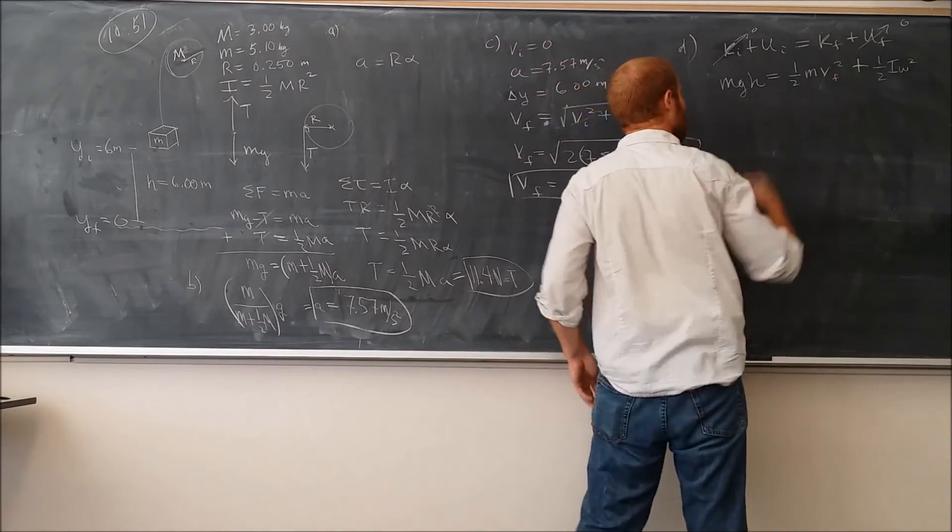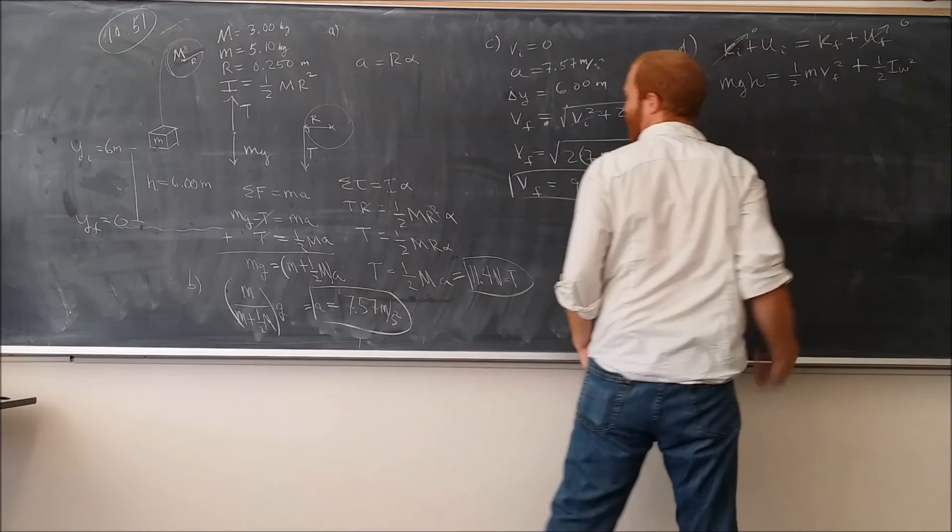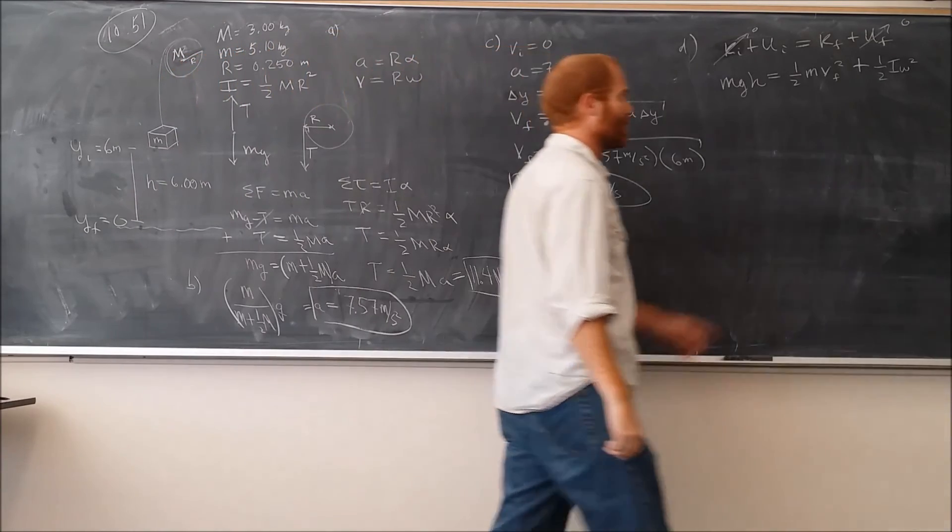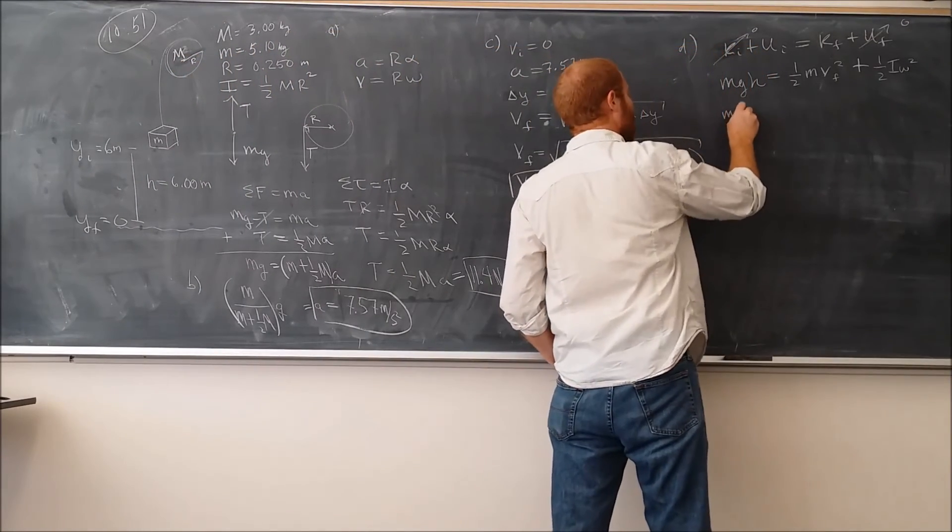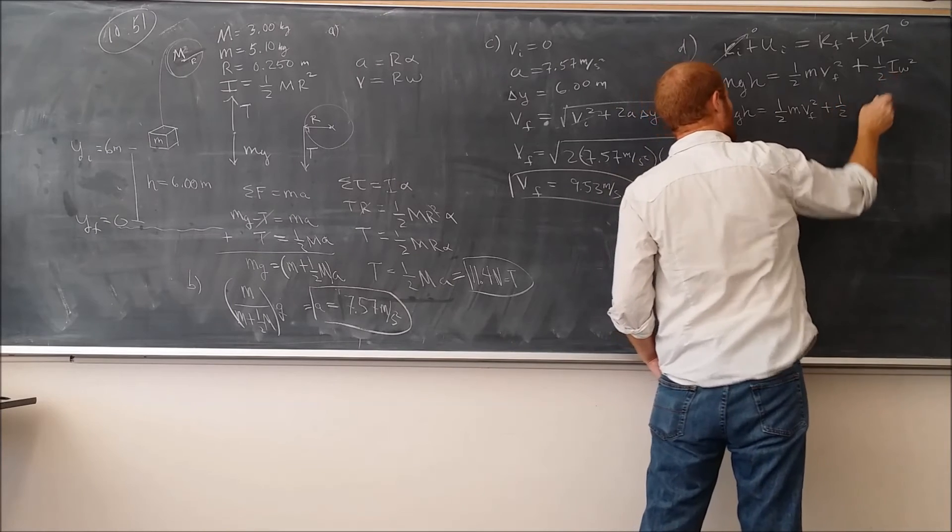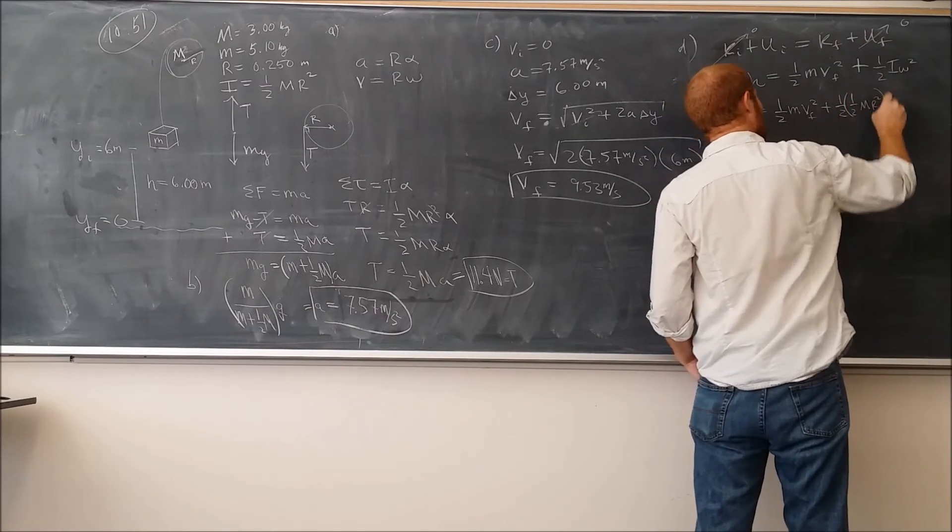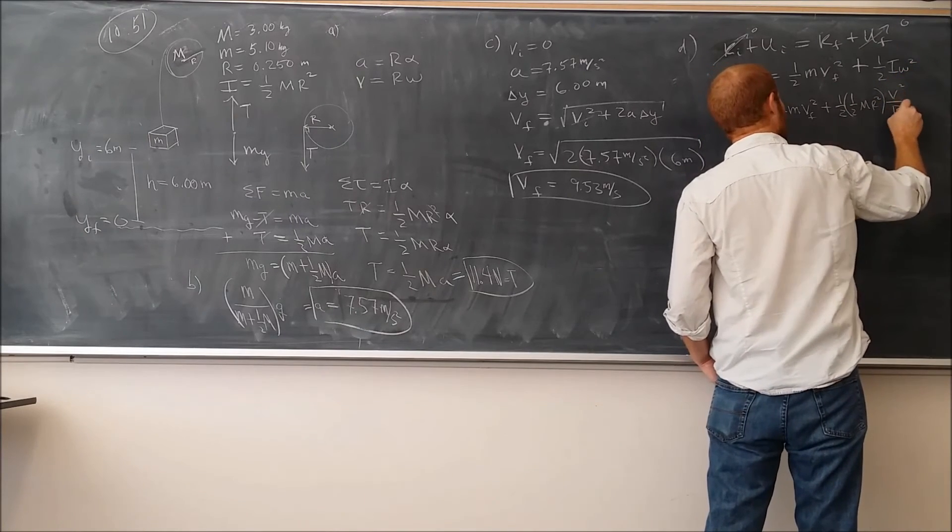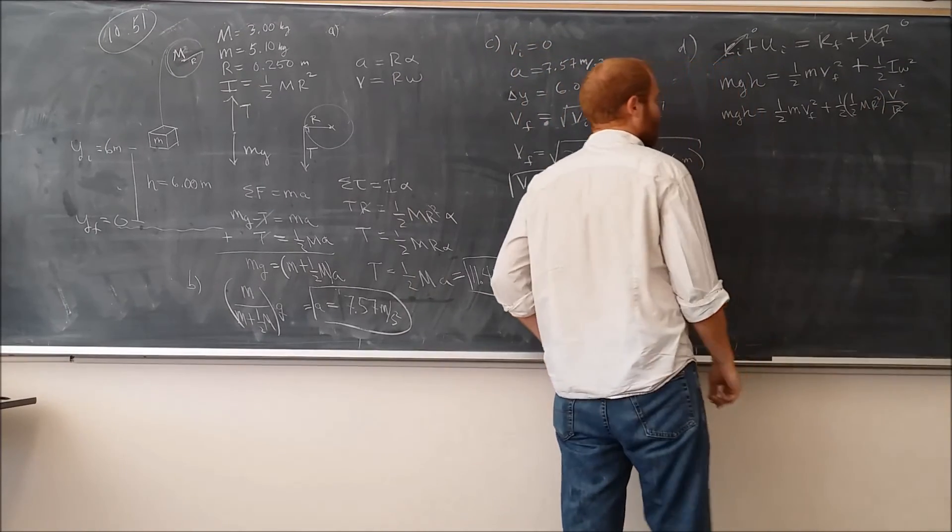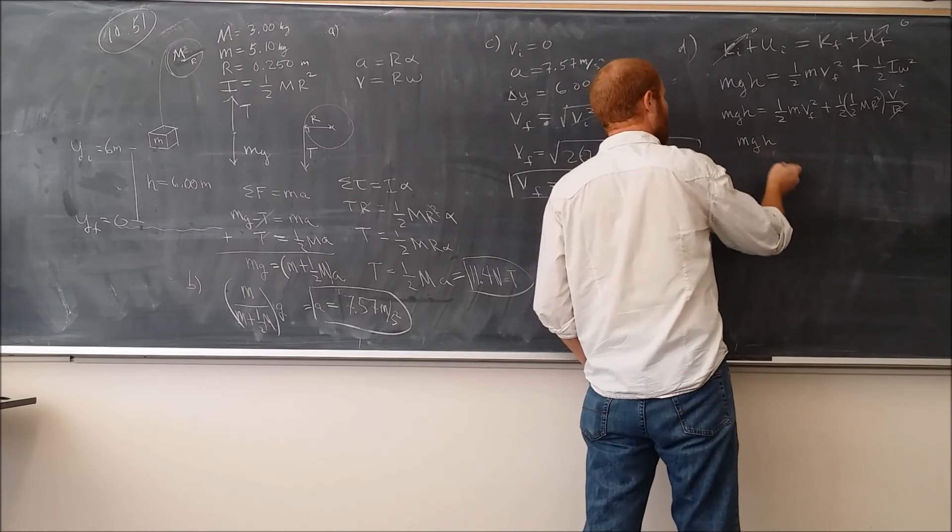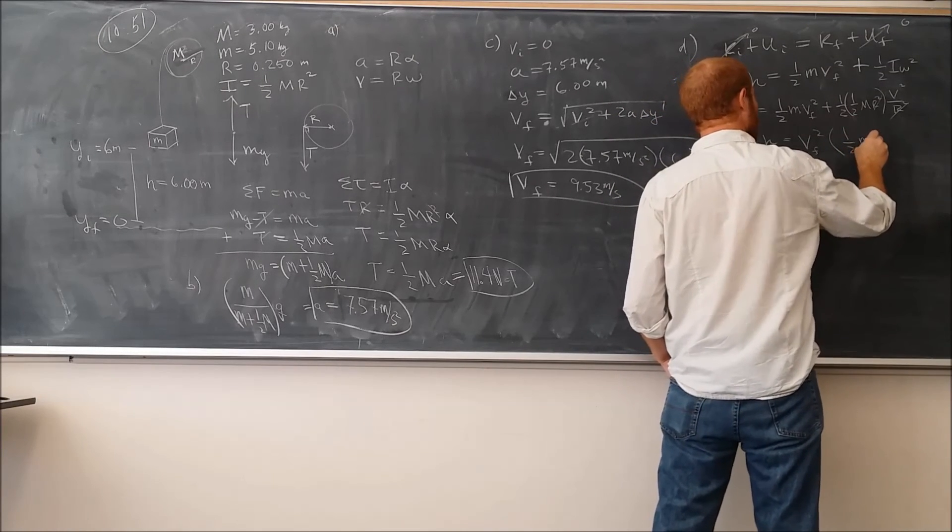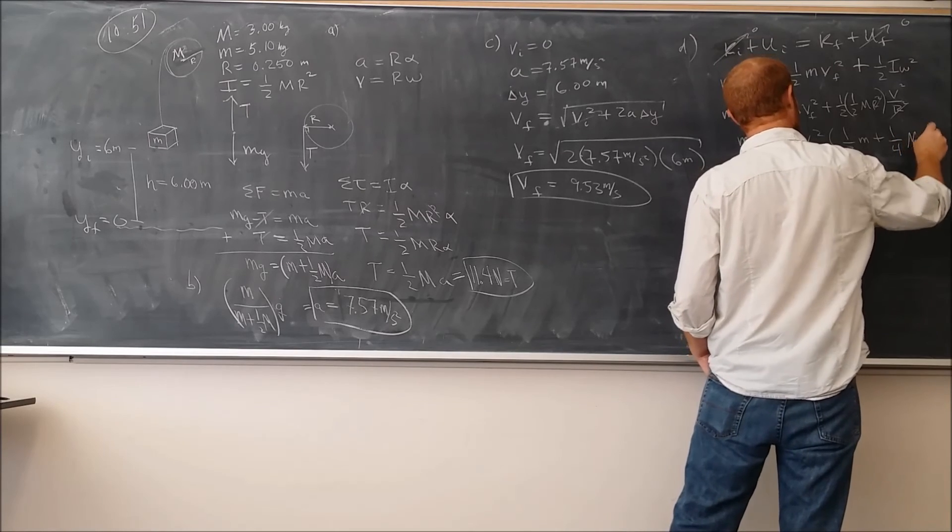Now what we need to do is to solve this for V. And in order to do that, we need to know something about omega. Just as much as A equals R alpha, it's also the case that V is related to omega like this. So we can replace the omega here with V over R. Omega is going to become V squared over R squared. Because omega is V over R, we have V squared. That makes this R squared cancel here and here.